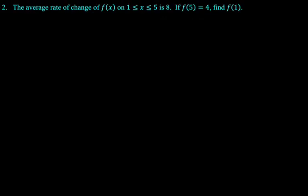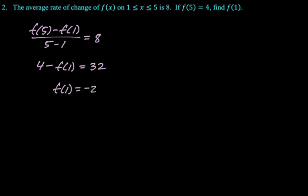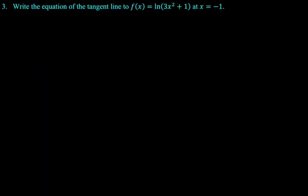The average rate of change of f(x), average rate of change, remember, is algebra 1 slope. On 1 to 5 is 8. If we know f(5) is 4, find f(1). All right. So, let's just set it up. So, it should be f(5) minus f(1) over 5 minus 1 is equal to 8. And this is just an equation, right? The only thing we don't know is f(1). So, we plug in the things that we do know, and we solve. And that's a little boring, but things come up.